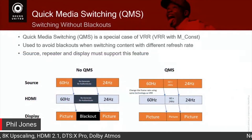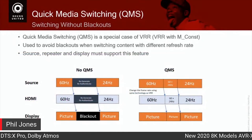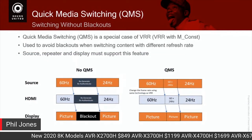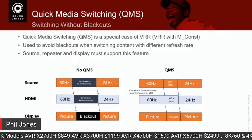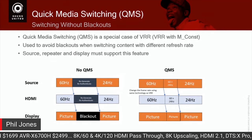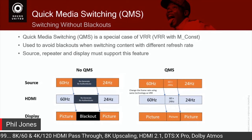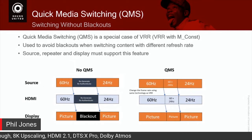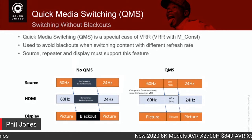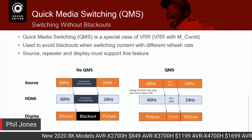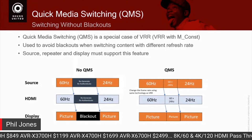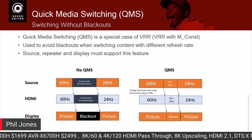Next is quick media switching. We've all seen it: you have a menu system on a TV, then you switch to the movie. When you go from the Netflix menu to a 24p movie, you get a blackout. Under the old HDMI 2.0b standard, going from one frame rate to another required re-authentication, which caused a blank screen.